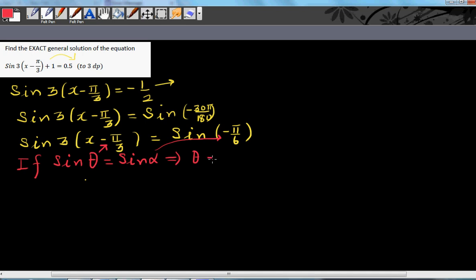So this implies I can say 3 times x minus pi by 3, comparing theta with this whole thing, is equal to n pi plus negative 1 raised to n times negative pi by 6.